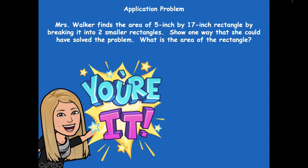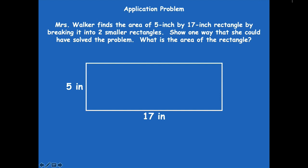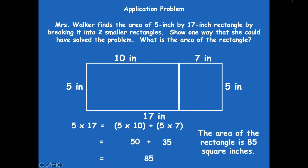Here's how I solved this problem. Here's my rectangle, 5 inches by 17 inches. I chose to break it into two smaller rectangles — one with a length of 10 and one of 7 — because multiplying by 10 is so much easier. So 5 by 17 becomes 5 times 10, plus 5 times 7. Five times 10 is 50, and 5 times 7 is 35. Fifty plus 35 equals 85, so the area is 85 square inches.